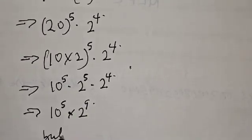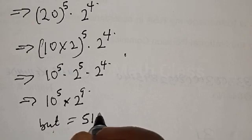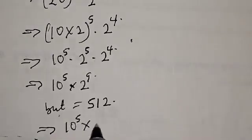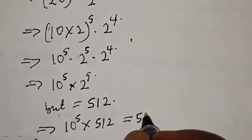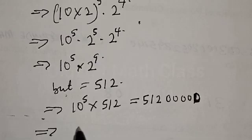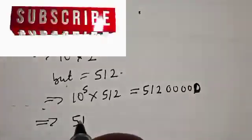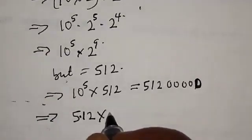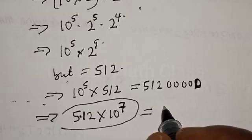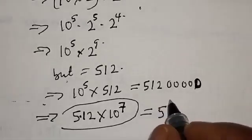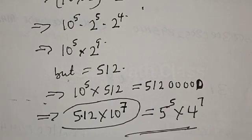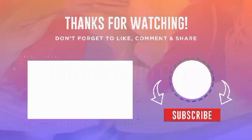Now 2 raised to power 9 is equal to 512. This implies that we have 10 raised to power 5 multiplied by 512, which equals 51,200,000,000. So that is our final answer: 5 raised to power 5 multiplied by 4 raised to power 7 equals 51,200,000,000. That is just how to calculate without using a calculator. If you have enjoyed the class, please don't forget to like, share, comment and subscribe. Thank you.